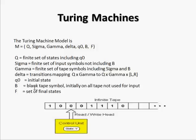q0 is the initial state, B means blank tape symbol, like empty or epsilon. F is the set of final states. This is our Turing machine.